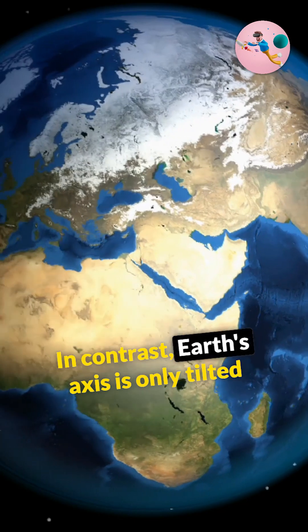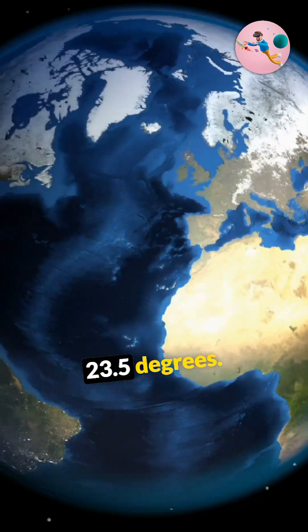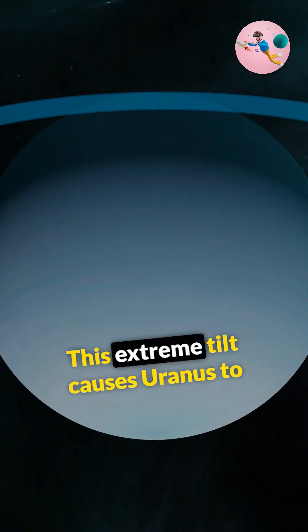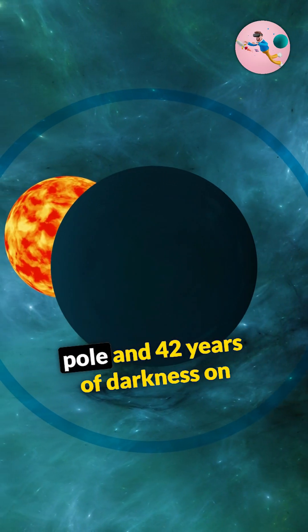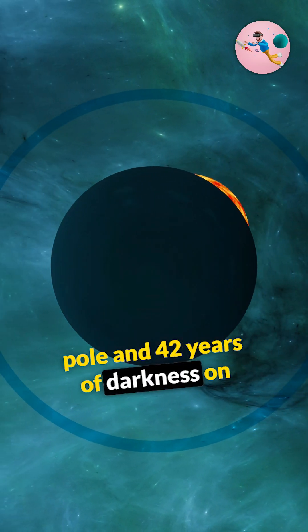In contrast, Earth's axis is only tilted 23.5 degrees. This extreme tilt causes Uranus to undergo 42 years of sunlight on one pole and 42 years of darkness on the other pole.